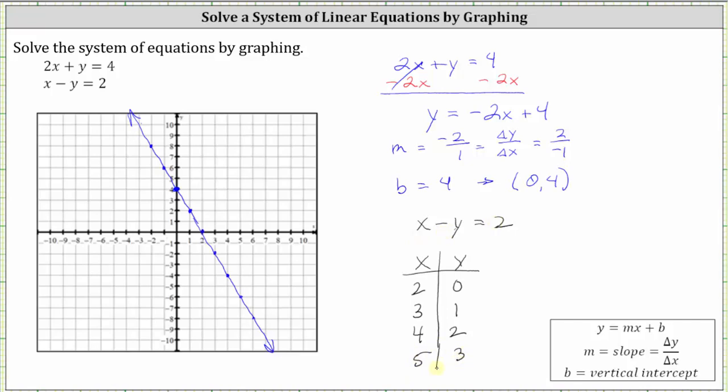Let's go ahead and plot these points: (2, 0), (3, 1), (4, 2), (5, 3). But looking at these points, we can see the slope where the change of y over the change of x is going to be up one, right one.